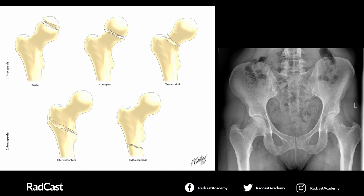The joint capsule itself runs between the intertrochanteric line around the hip joint and is made of multiple ligaments that hold the joint in place. So anything at that intertrochanteric line or below is an extracapsular fracture.